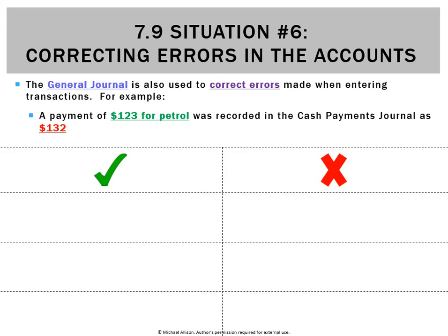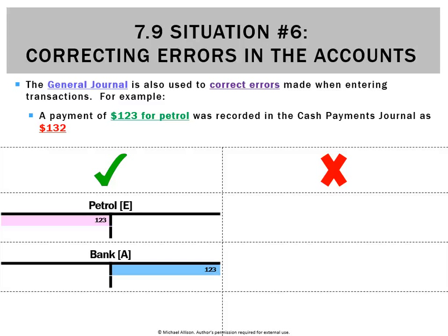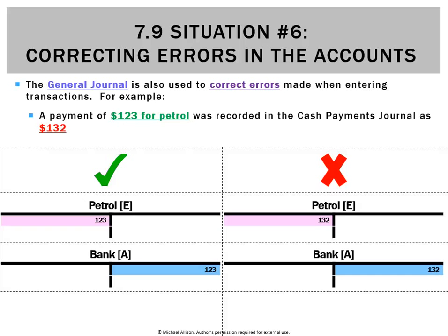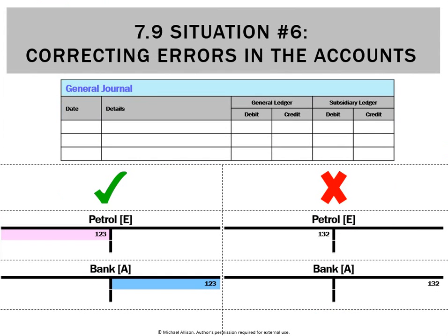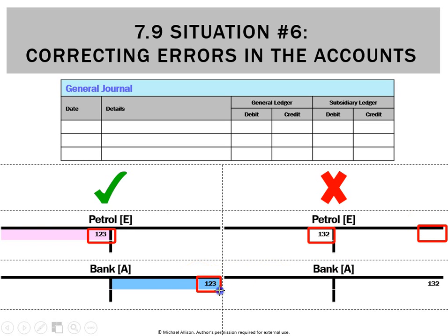Another type of mistake is recording the wrong amount. A payment of $123 for petrol was recorded in the cash payments journal as $132. We should have done an expense called petrol of $123 and bank should have gone down $123. We got the debit and credit correct — we just got the wrong amount, so we've got $9 too much. The petrol ledger has a debit of $132 but it should only be $123, and the bank shows $132 instead of the correct $123.